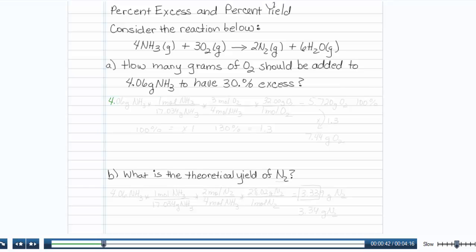So I'll start with 4.06 grams of NH3, which is what I'm given, and I will find the moles of NH3. There is 17.034 grams of NH3 in 1 mole of NH3.